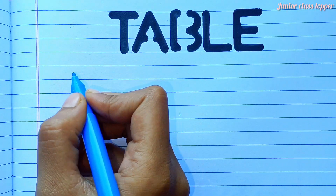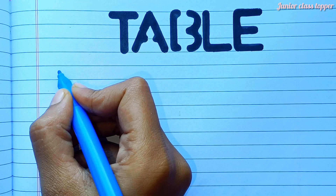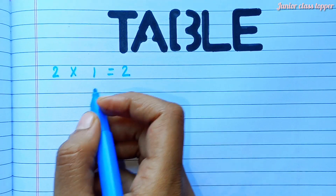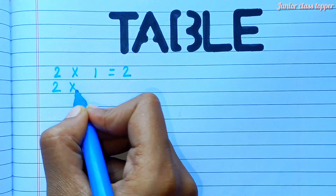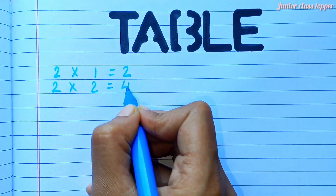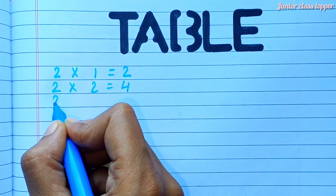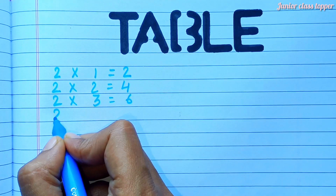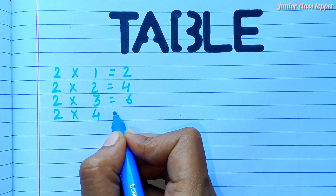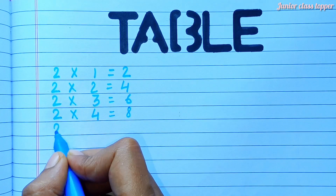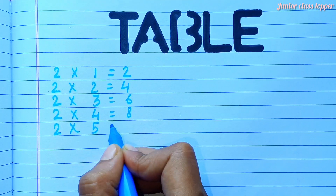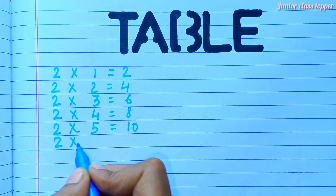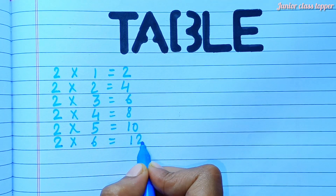Table of two. Two ones are two. Two twos are four. Two threes are six. Two fours are eight. Two fives are ten. Two sixes are twelve.